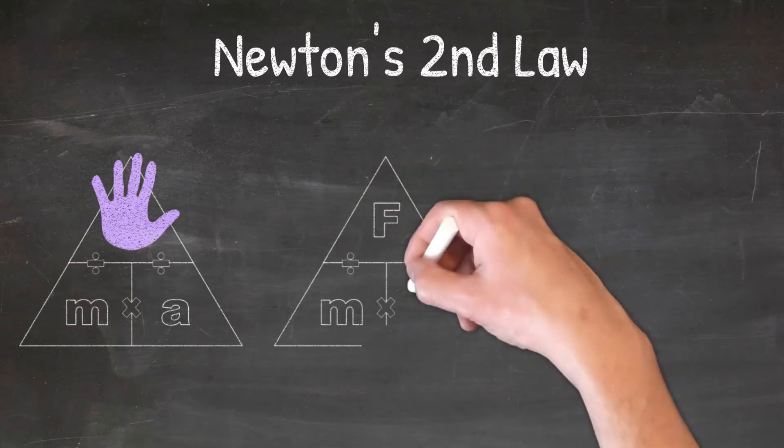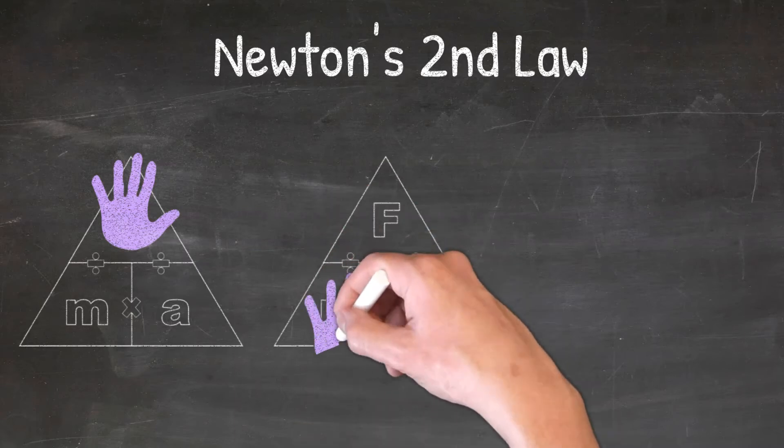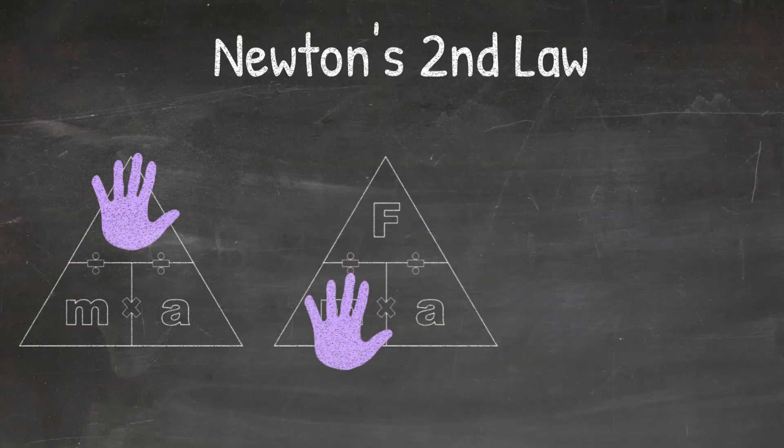If I'm going to solve for the mass, I cover up the letter M and the triangle tells me to do force divided by acceleration. I know this because the variable F is on top of the variable A.